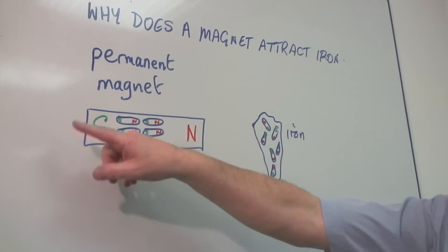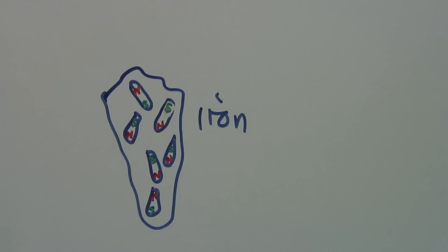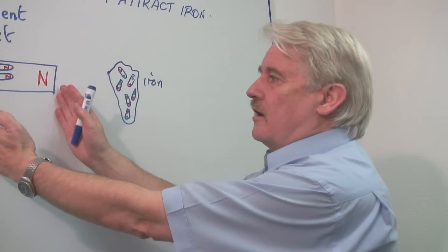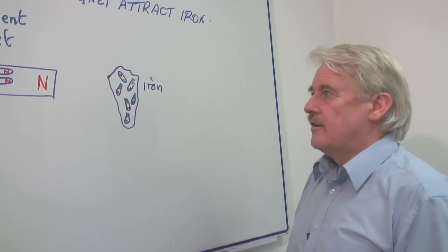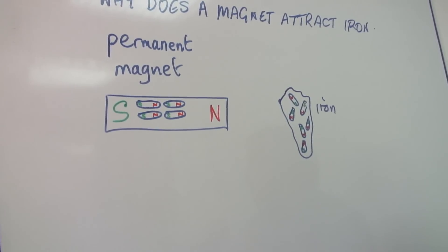Well, if you've got a permanent magnet here and here you've got a piece of iron. When you bring the iron up to the magnet, it sees the north pole, sees south poles and is attracted. It sees north poles and it repels.